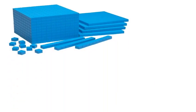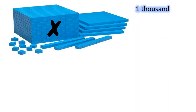Let's take a look at the model on the screen. This model is representing a number. Look at the black X — do you know what this block represents? If you said one thousand, you are correct. How many thousand blocks do you see? There is only one. So therefore, we have one thousand.